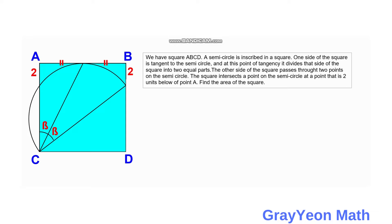At this point of tangency, it divides the side of the square into two equal parts. The other side of the square passes through two points on the semicircle, intersecting at a point that is two units below point A. Find the area of the square.